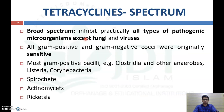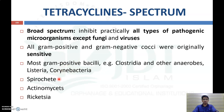Regarding the spectrum of tetracycline — as mentioned, it is a broad spectrum antibiotic that will inhibit practically all types of pathogenic microorganisms except fungi and viruses. Most gram positive and gram negative cocci were originally sensitive. Gram positive bacilli like Clostridia, Listeria, and Corynebacterium are sensitive. Tetracycline can also inhibit spirochetes, Actinomyces, and Rickettsia.